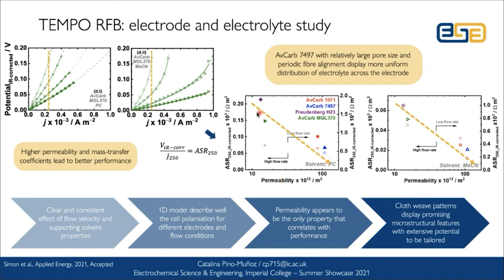We find a clear correlation with performance: electrodes that have higher permeability and higher mass transfer coefficients are the ones that lead to better performance in this system. For our particular case, AFCAR 7497 performed the best because it has relatively large pores and periodic fibre alignments, which allows for an even distribution of electrolyte through the electrode materials.